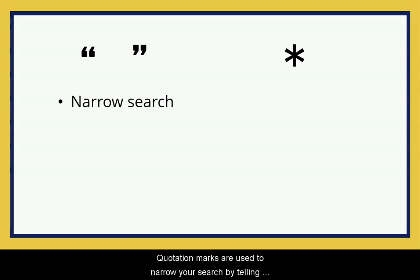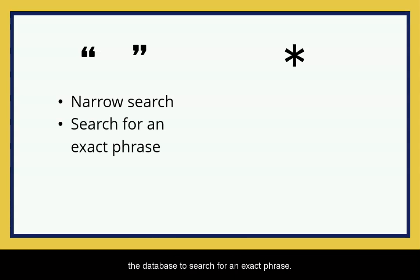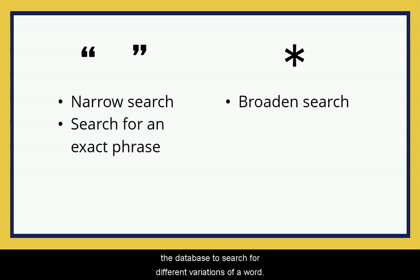To summarize, this video has talked about two Boolean modifiers: quotation marks and the asterisk. Quotation marks are used to narrow your search by telling the database to search for an exact phrase, and the asterisk is used to broaden a search by telling the database to search for different variations of a word.